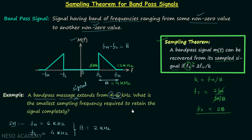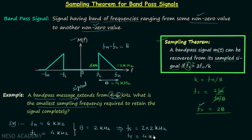The example asks us to find the smallest sampling frequency required to retain the signal completely. We know the minimum sampling frequency FS equals 2 times the bandwidth, which is 2 times 2 kHz, giving FS equals 4 kHz. This is the answer to the example problem.